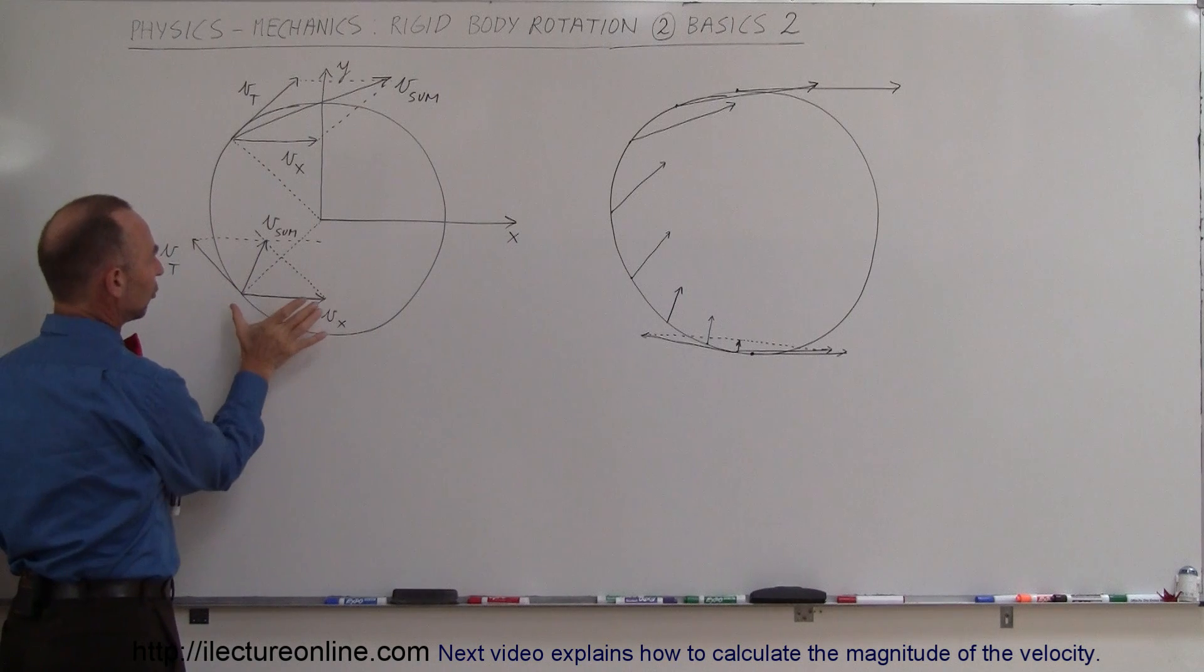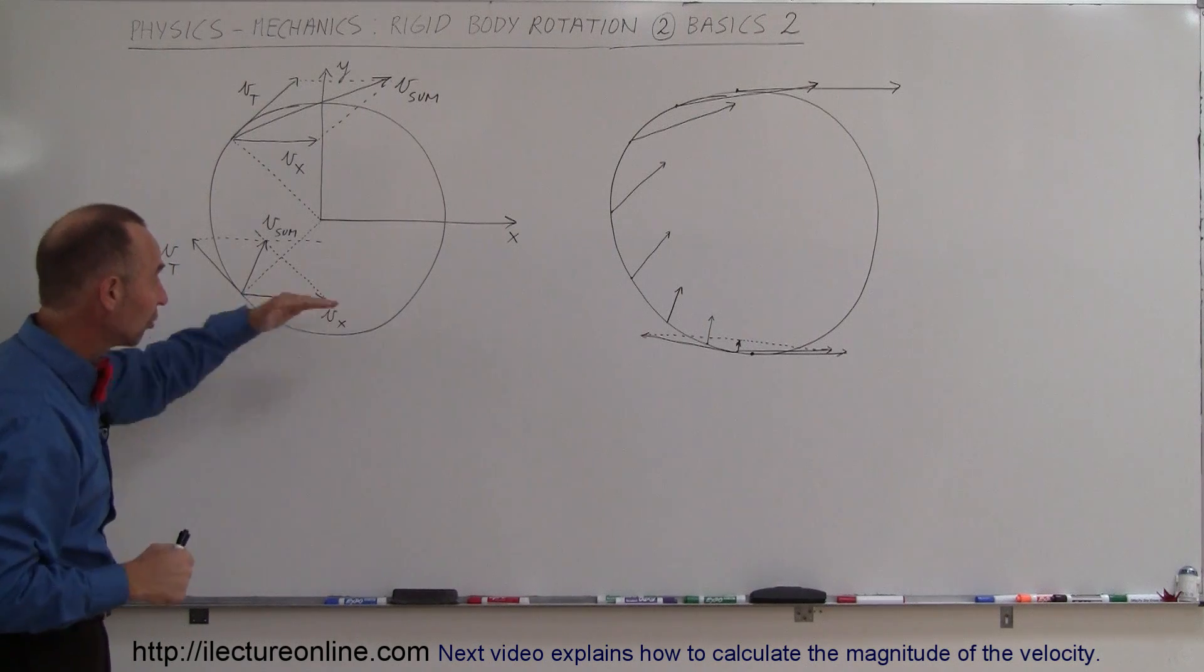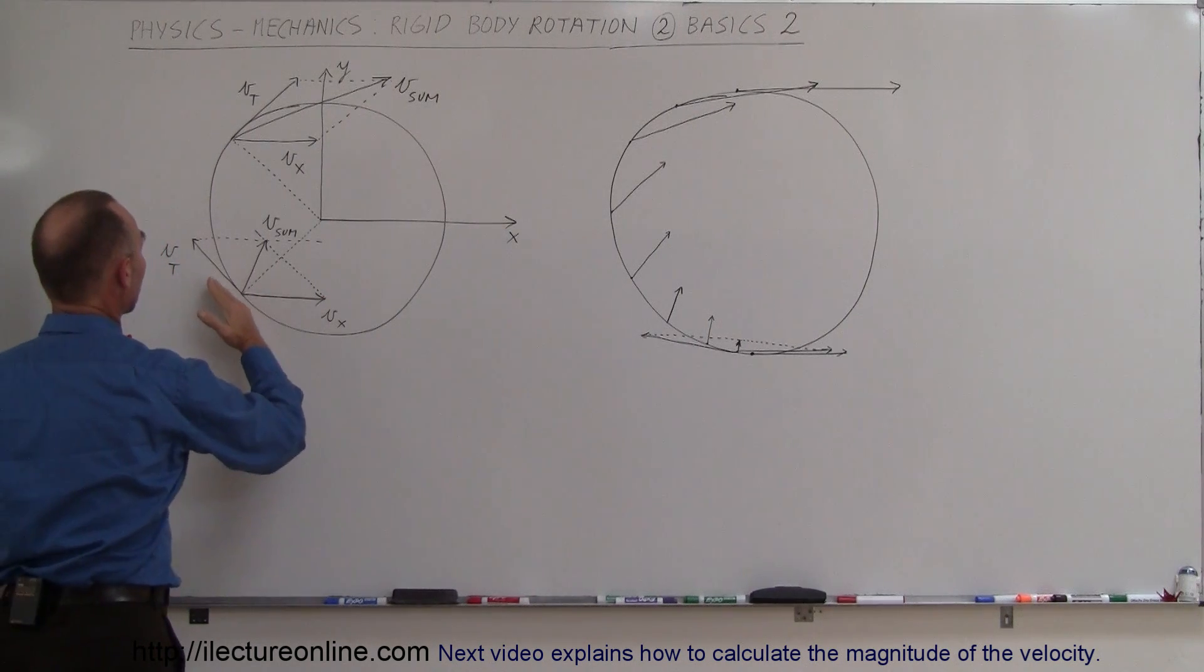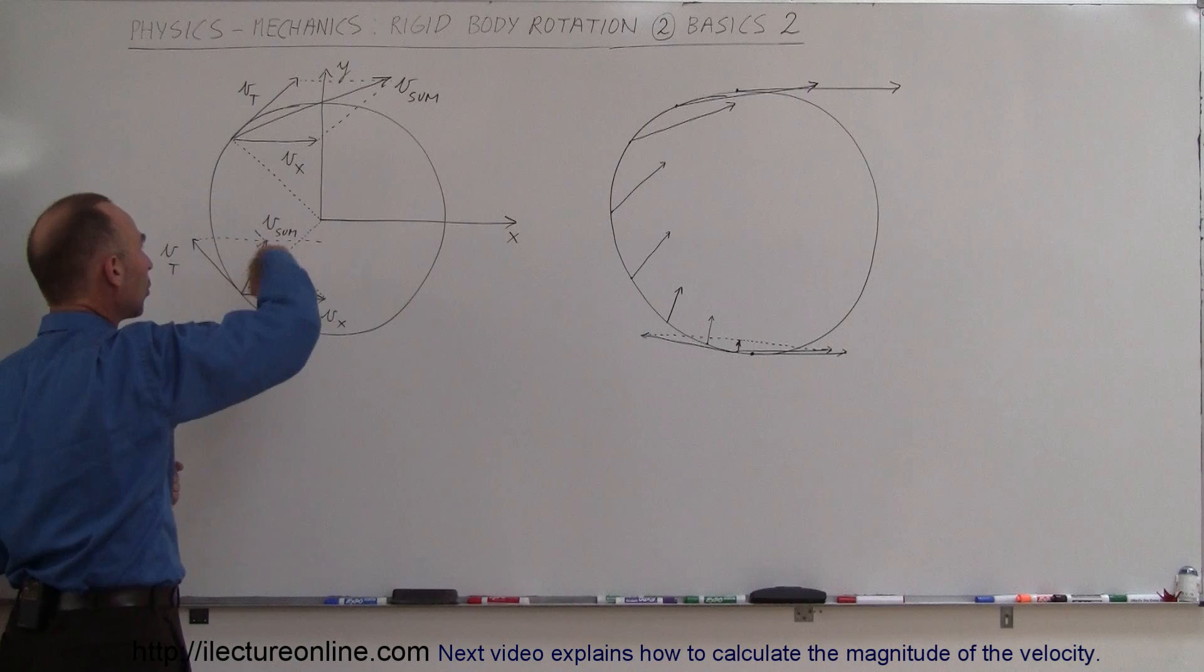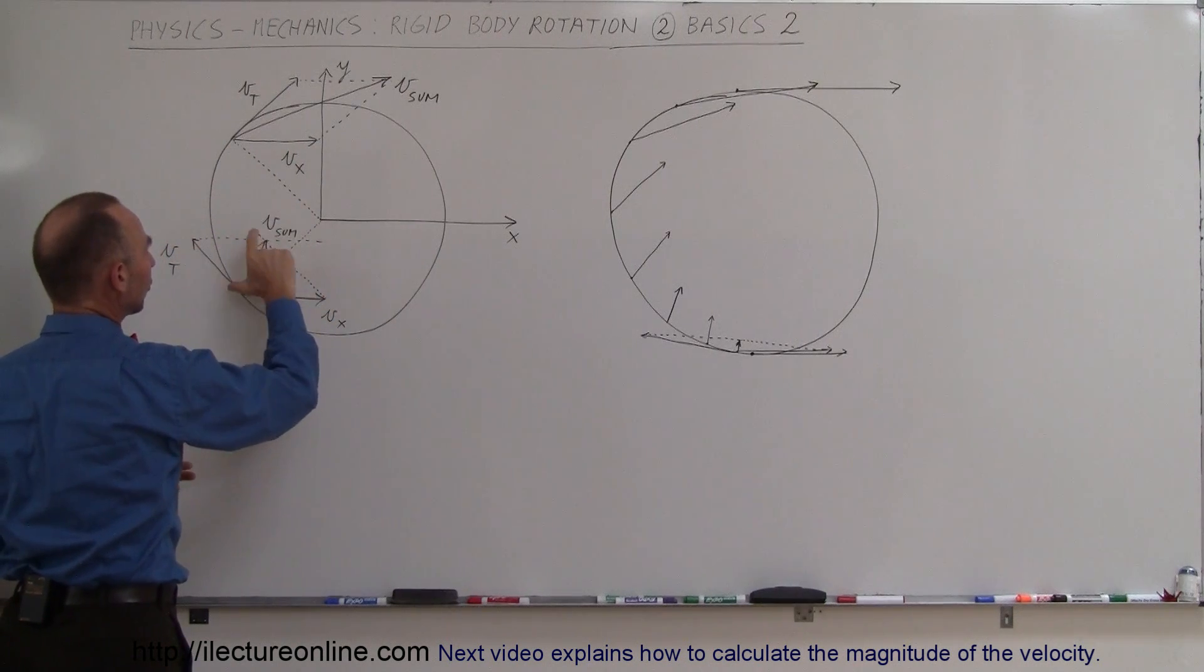You want to draw the horizontal vector V sub X that results from translational motion, and then draw the tangential velocity that's due to rotational motion. Then we add those two vectorially.